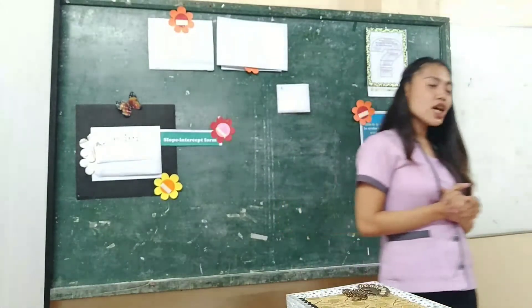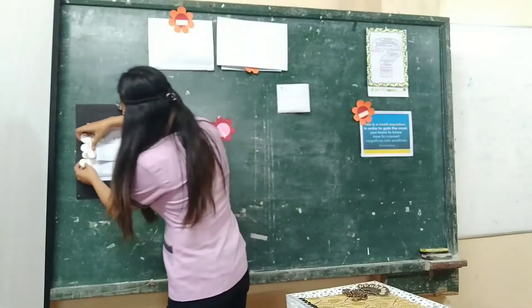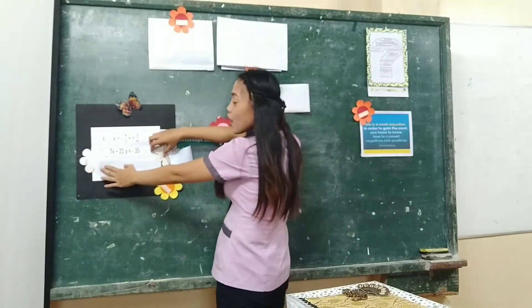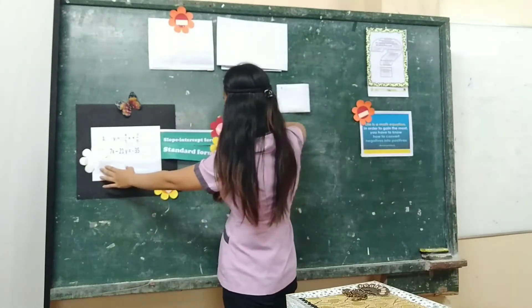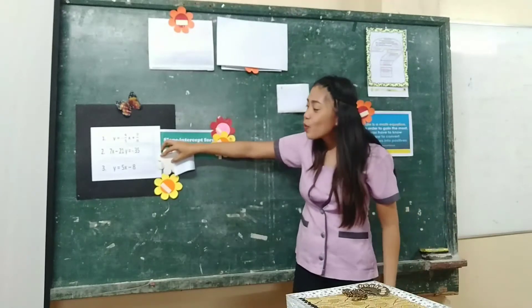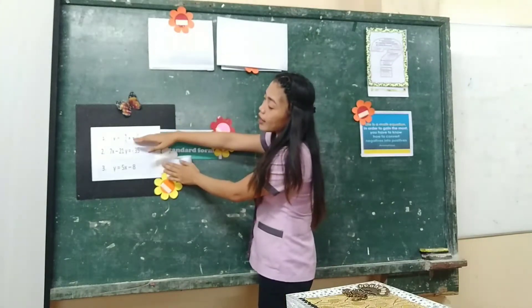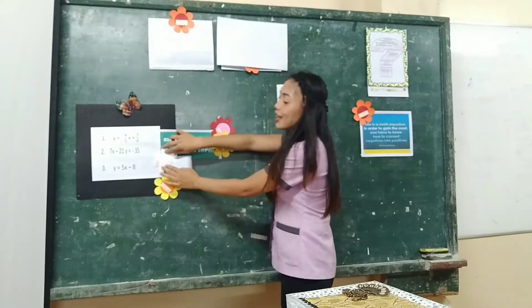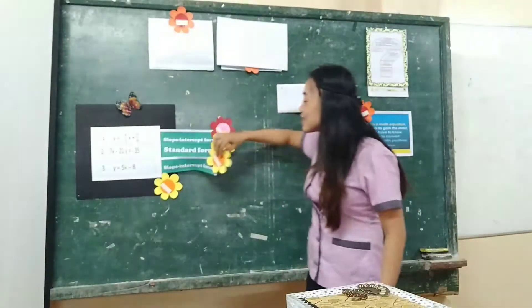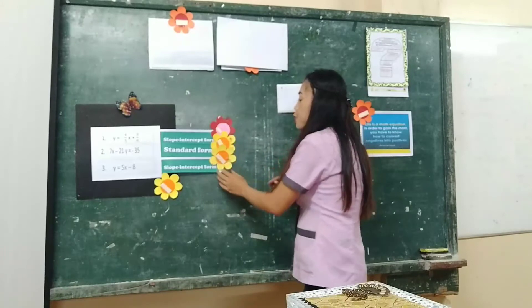Now, group 2, what's your answer for linear equation number 2? You answered slope-intercept form. Why slope-intercept form? So the correct answer is: this is in standard form. Now, for number 3: y equals 5x minus 8. Try to observe equation 1 and equation 2. What do you think is equation 3? It is in? Very good. It is in slope-intercept form. So, who can now differentiate slope-intercept form and standard form?